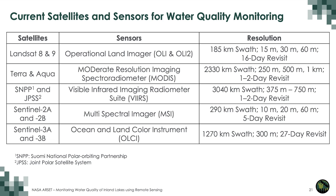Terra and Aqua satellites carry MODIS — the Moderate Resolution Imaging Spectroradiometer. The swath width is much higher than Landsat at 2,330 kilometers. Pixel resolution is moderate: 250 meters, 500 meters, or 1 kilometer depending on the band. The revisit time is one to two days. NOAA satellites SNPP and JPSS carry the Visible Infrared Imaging Radiometer Suite (VIIRS), similar to MODIS, with a broad swath width of about 3,040 kilometers, pixel resolution of 375 to 750 meters, and a one to two day revisit time.